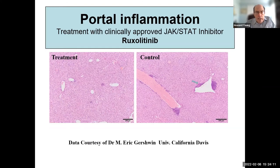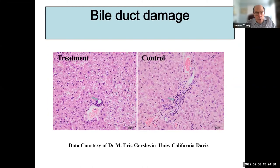I just received data from Eric Gershwin where they were treating mice with the clinically approved JAK-STAT inhibitor Ruxolitinib. The treatment showed very nice results — it inhibited lymphocyte infiltration and looks like it could cure the disease in women. This is true for both portal inflammation and bile duct damage. They treated for eight weeks and then sacrificed the mice. We're very excited because this is a clinically approved drug, and for women who don't do well on existing PBC therapy, this might be worthy of a clinical trial.